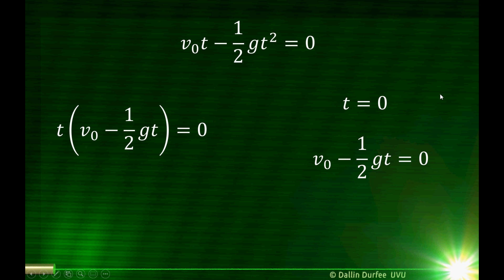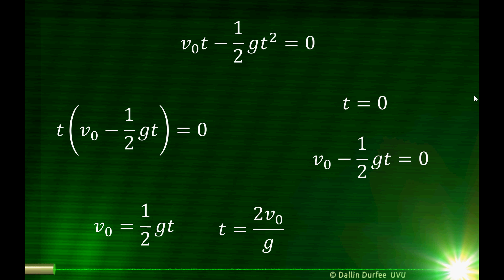There are two times at which the keys are at that particular height: when I let go of them and when I catch them. t equals zero is the time when I let go of them — that's not the solution we're interested in. We want to know how long we have to wait before we catch them. Solving v-naught minus one-half gt equals zero, we find that the time the keys are in the air is 2v-naught over g.